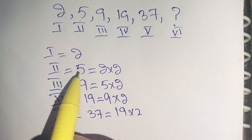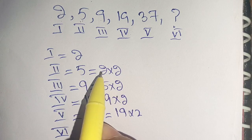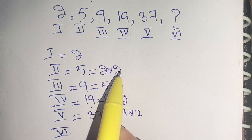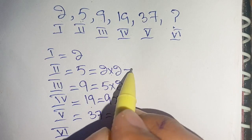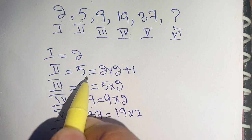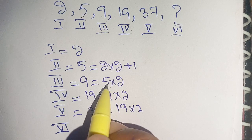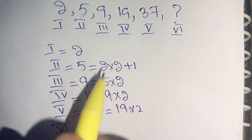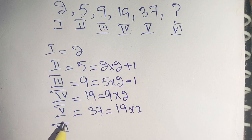The second term is 5, and when we multiply the first term by 2, it equals 4. We make 4 into 5 by adding plus 1, so it becomes 5. For the third term: 5 times 2 equals 10, but we need 9, so when we subtract minus 1 it becomes 9.